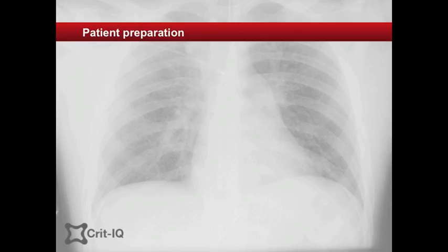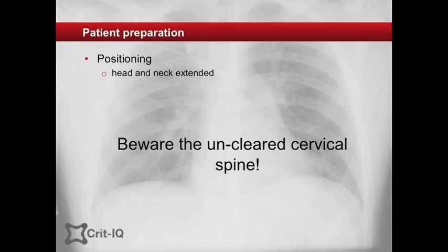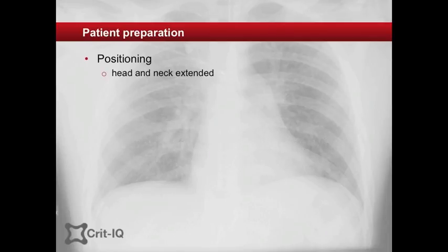Bearing in mind that this procedure is almost always done in a crisis situation, some rapid preparations can be made to increase the chances of success. Firstly, the patient should be positioned to maximise access to the cricothyroid membrane. This usually involves hyperextension of the head and neck. This can sometimes be facilitated by placing a shoulder roll or pillow under the shoulders to allow the head to gently fall backwards.